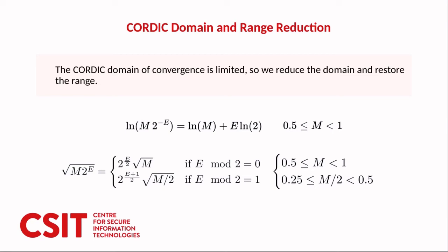As the domain of convergence is limited we reduce the domain and restore the range. So we have an input value and we pre-process it. We input the result of that into the CORDIC algorithm and then we do some post-processing on the result. For natural log we bring the value into the range 0.5 to 1. We input that value into the CORDIC and then we're able to find the result that it would have been had the reduction not taken place. A similar thing happens for the square root except there's a slight variation when the amount to shift by to bring it into the 0.5 to 1 range is odd.